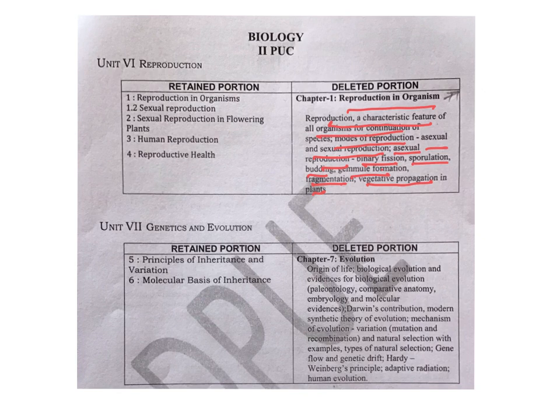Usually one and a half hours is kept for this, and two more questions will be asked. In Chapter 2, they have clearly given that you only need to study about sexual reproduction — what is sexual reproduction and what are the events of sexual reproduction. The second chapter, sexual reproduction in flowering plants, is totally retained.